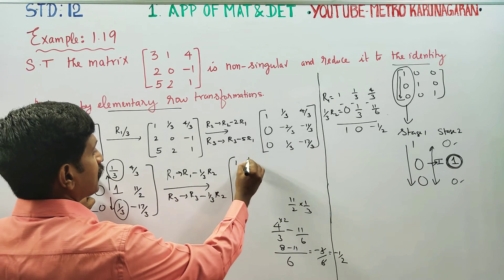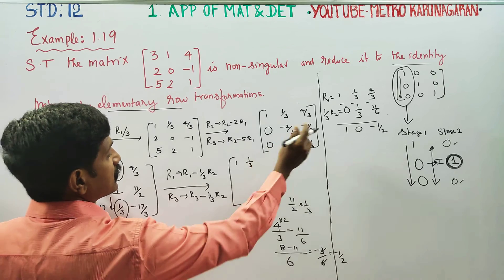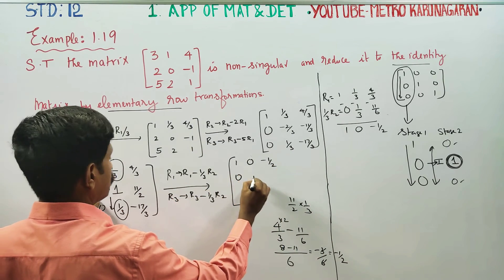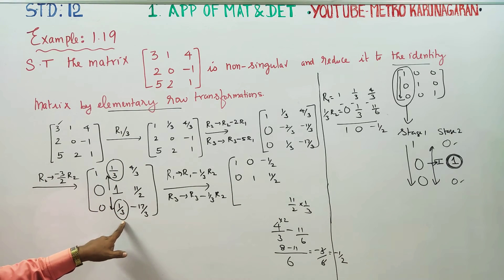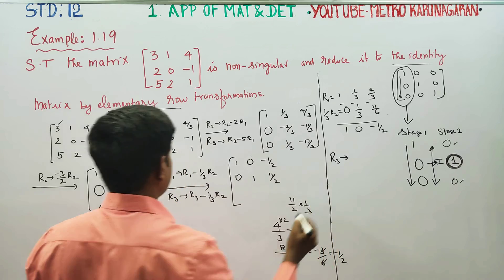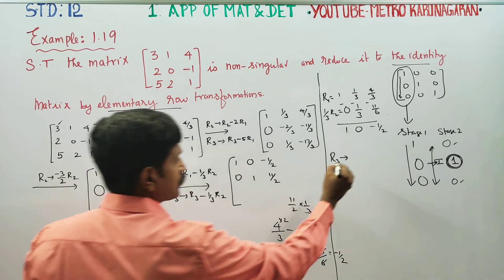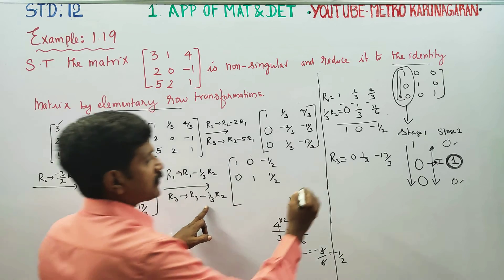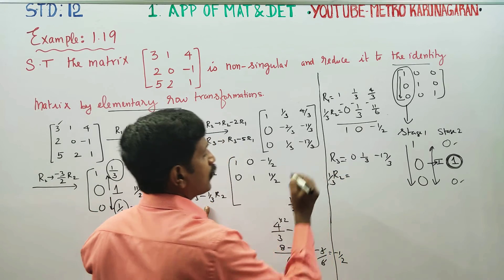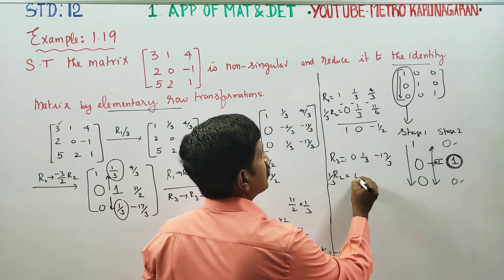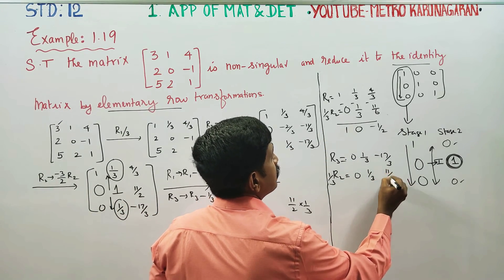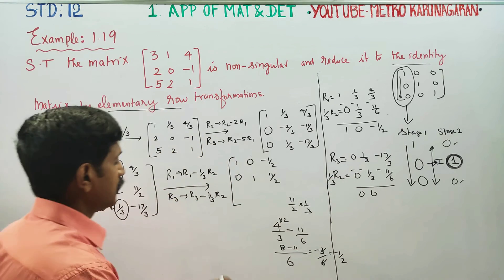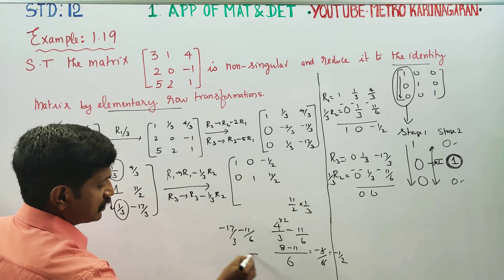At this stage: R1 is 1, 0, minus 1/2. R2 is 0, 1, 11/2. Now for R3: R3 = R3 minus (1/3) R1. R3 was 0, 1/3, minus 17/3. Computing: LCM is 6, 3 tables 6 is 2 times. Minus 34 minus 11 — if you add — gives 45 by 6 minus. Then 3 tables 2 times 15, so minus 15/2.